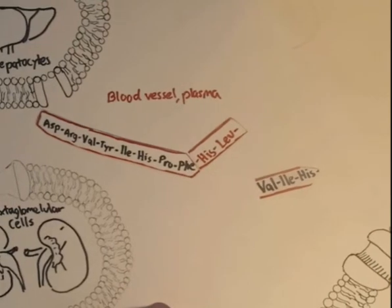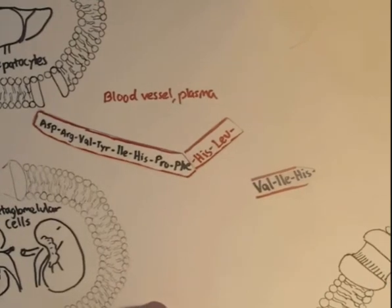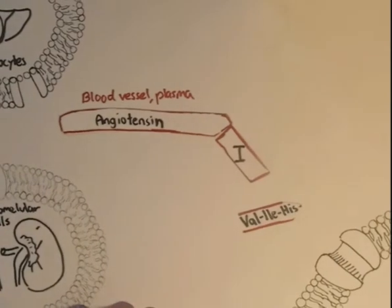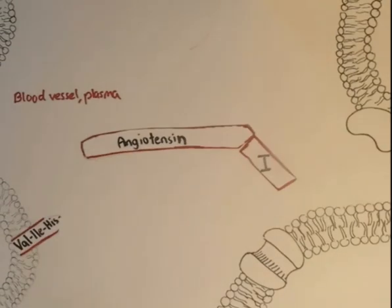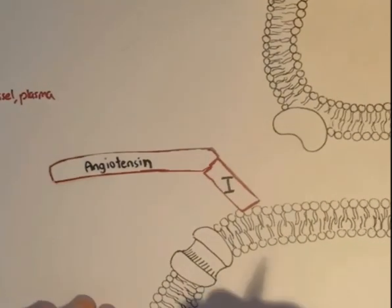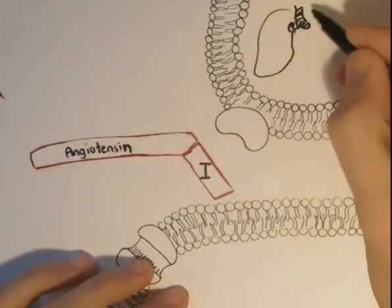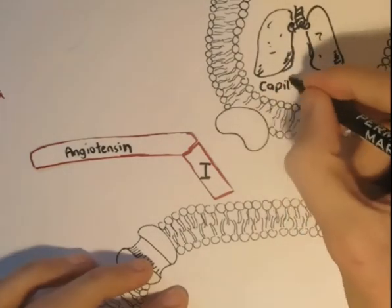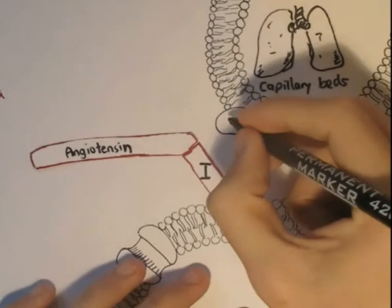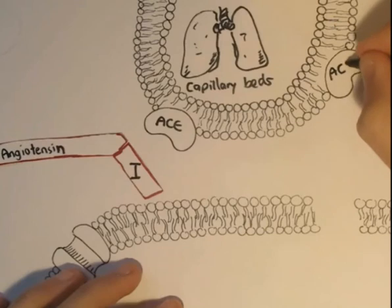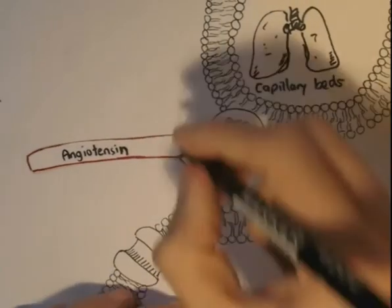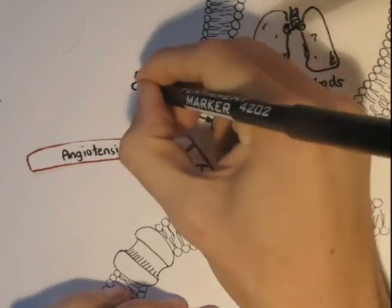So angiotensinogen converts to angiotensin-1. Angiotensin-1 then travels through the plasma and the blood vessels until it comes to the lungs. The capillary beds of the lungs have enzymes called ACE. We'll draw ACE here in the cell membrane. ACE, if you remembered from the last renin overview, stands for angiotensin-converting enzyme.